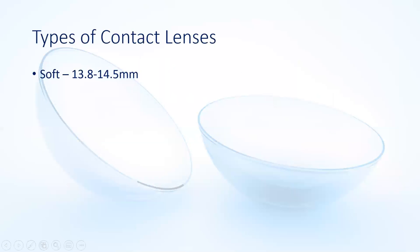Those soft lenses are now the majority of what we fit in practice and what our patients are wearing. A normal soft lens is around about 14mm in diameter — slightly bigger than the coloured part of the eye, the iris — so they fit nicely over that and don't show up too much.